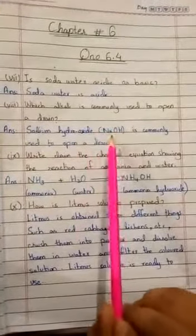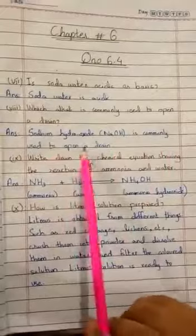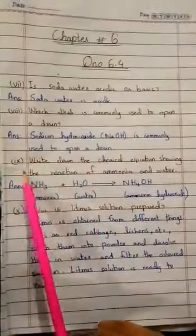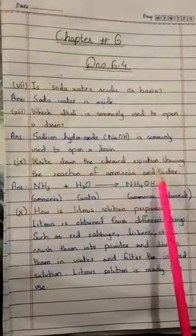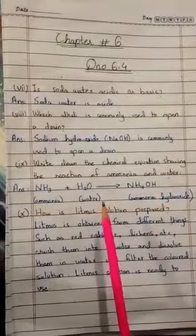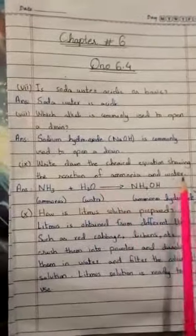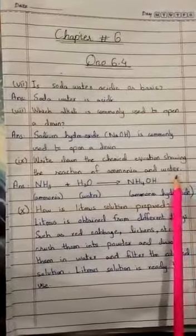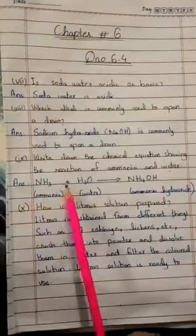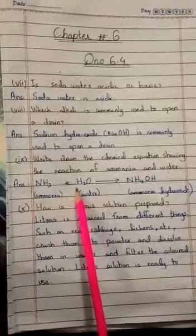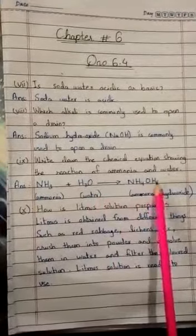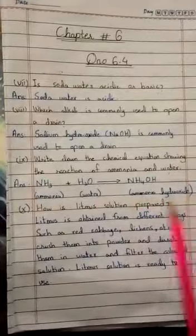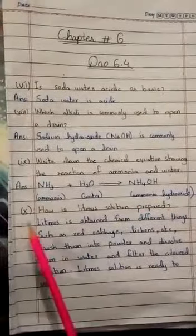Its formula NaOH is commonly used to open a drain. Part 9: Write down the chemical equation showing the reaction of ammonia and water. In this chemical equation, we have ammonia and water reacting to make a product. So NH3 (ammonia) plus H2O (water), these two react, and the product is hydroxide.